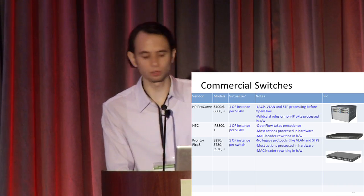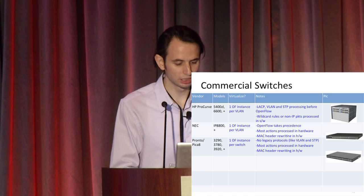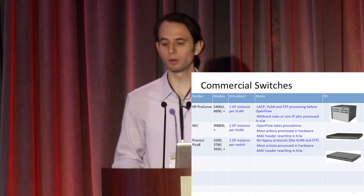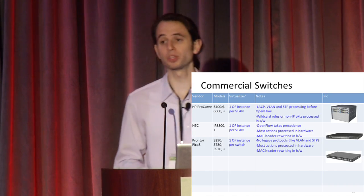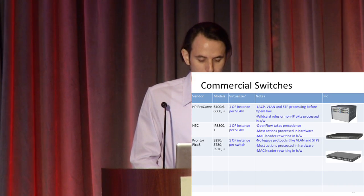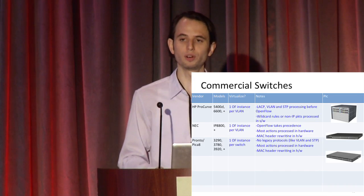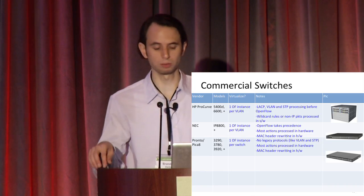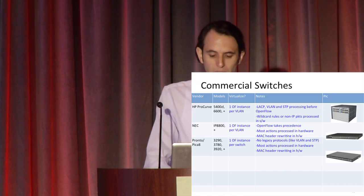There may be limitations to what you can do on some of these switches, and some come from what the forwarding hardware can do - there's just no way to work around it sometimes. For example, the HP ProCurve has to do a few things in software that other platforms do in hardware. Also, a lot of these switch implementations' firmware doesn't support everything, although this has changed for Pika 8 - they do support with their XOR Plus a whole bunch of other protocols alongside OpenFlow.